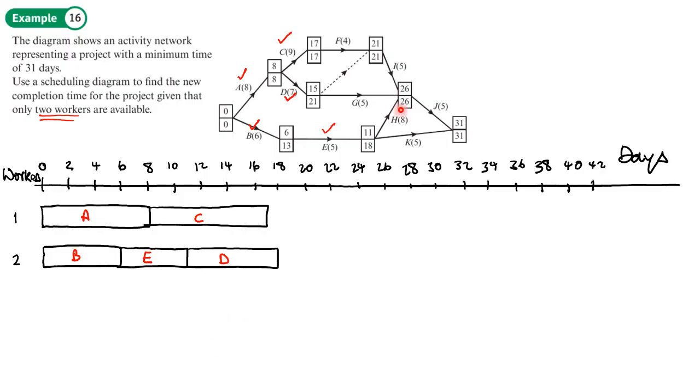We have a choice of different activities, but remember we want to pick the ones without a float because we don't have a choice. So activity F is what we're going to put in now and that has a length of 4. For the next part, we've got choices for different activities that we could start with. But the one that's going to get it finished in the quickest time is assigning activity G here. By using activity G which has a duration of 5, we can put that in here.